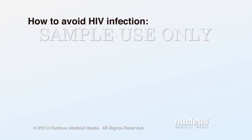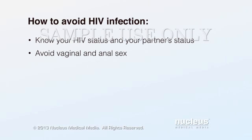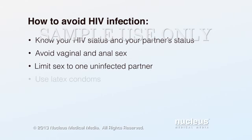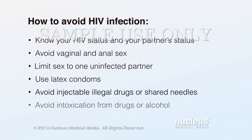To avoid getting or spreading an HIV infection, know your HIV status and your partner's status by getting tested regularly. The most effective way to prevent HIV infection is to avoid vaginal and anal sex. When engaging in sexual activity, you will be less likely to contract HIV if you only have sex with one uninfected partner or use latex condoms for protection. Avoid using injectable illegal drugs or sharing drug needles, because the needles may have the virus on them. Avoid intoxication from drugs or alcohol, because you will be more likely to engage in unsafe sexual behavior.